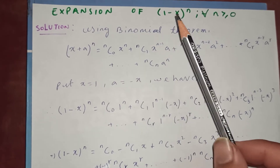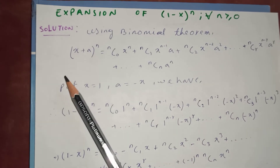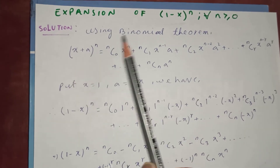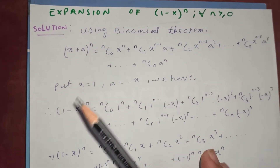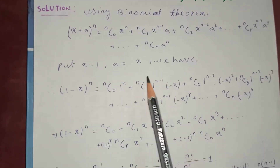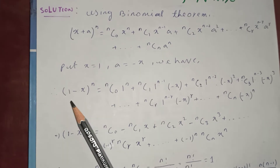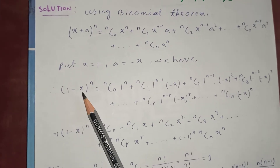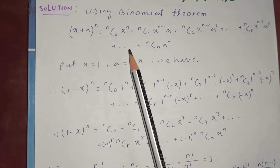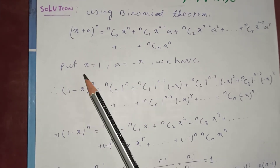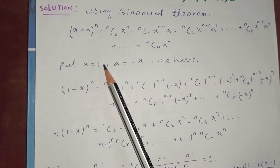Now we want (1 minus x), right? Meaning put x equal to 1 and a equal to negative x. So x in the binomial theorem becomes 1.